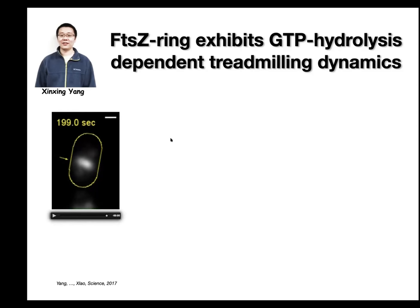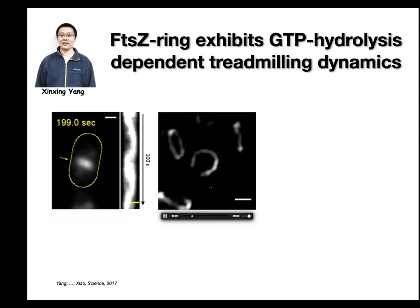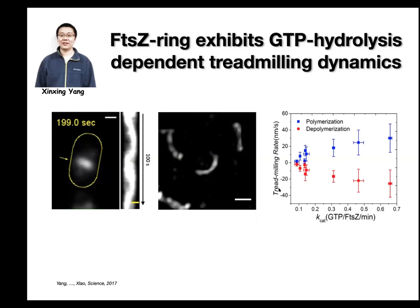If I draw a line across the middle cell and project over time — that's called a kymograph — you can clearly see that the intensity of the Z-ring cluster is zigzagging across the middle cell, indicating directional movement. Here is the movie again where we look at the ring head-on. You can clearly see this directional movement. We can then measure the rate of the leading edge and also the rate of the trailing edge — basically the polymerization and depolymerization speed of FTSZ polymers. We found those two rates are very tightly coupled to the GTP hydrolysis rate of FTSZ. Xinxin purified all these mutants and characterized their GTPase activity, showing that this dynamics is only coupled to the GTP hydrolysis rate.